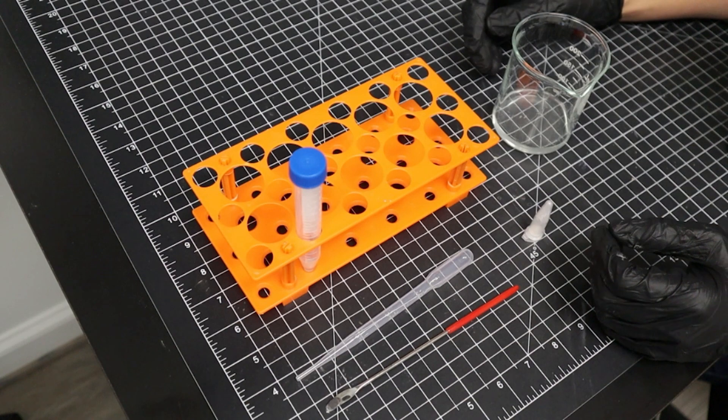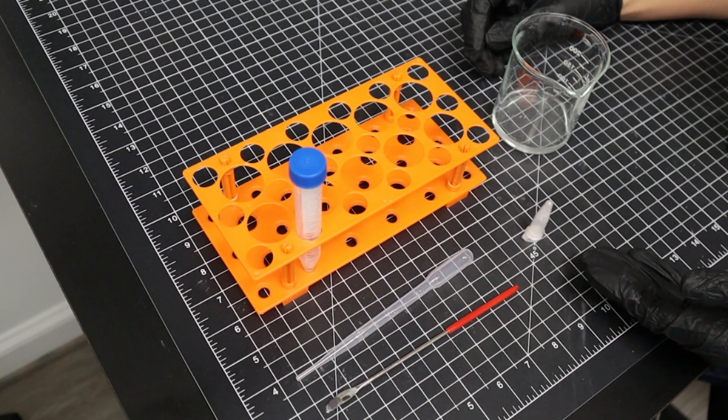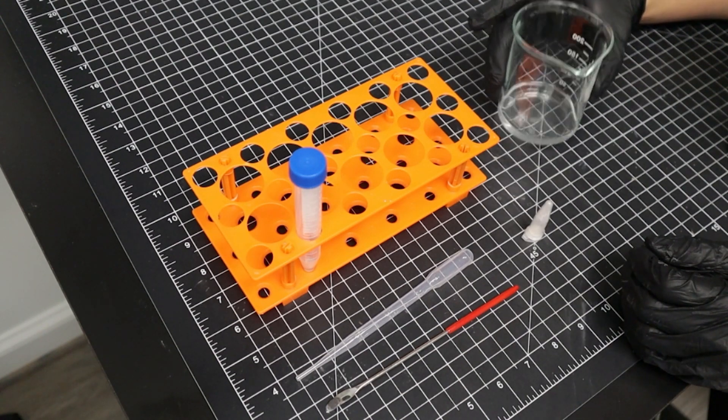Creating a solution is quite simple. You'll need a vial, a pipette, your powder, a metal spoon, and a solvent.